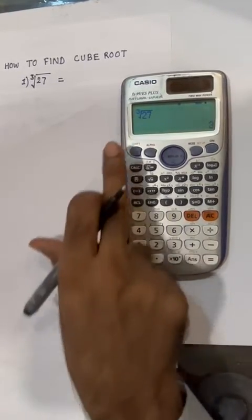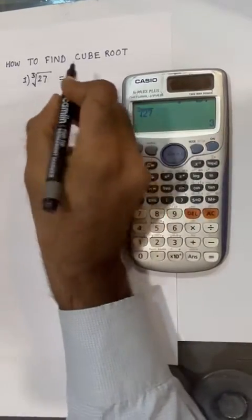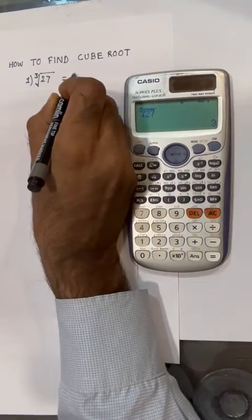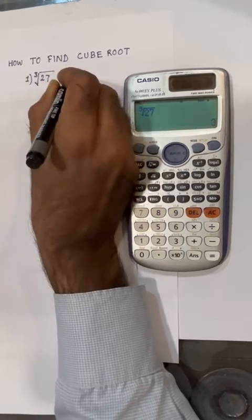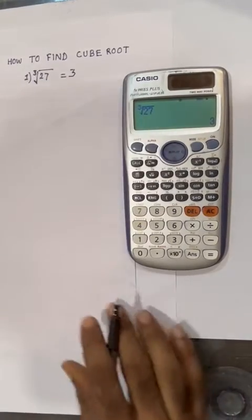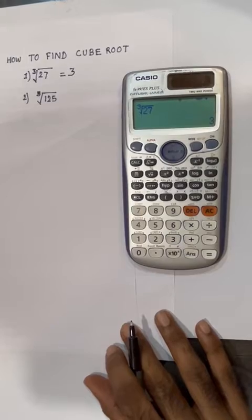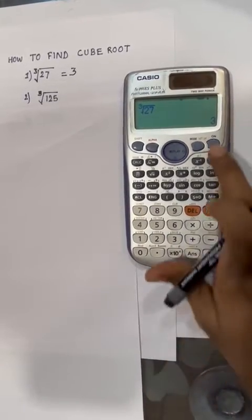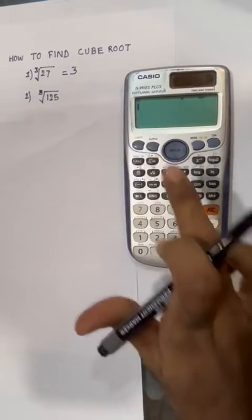The cube root of 27 is 3. Now we will take a second example, the cube root of 125. Press shift and cube root.